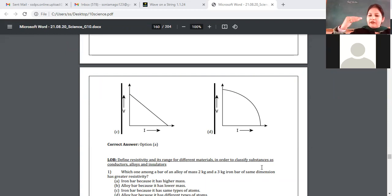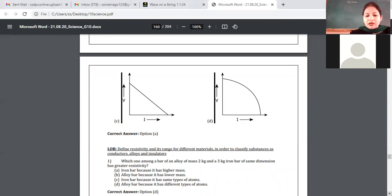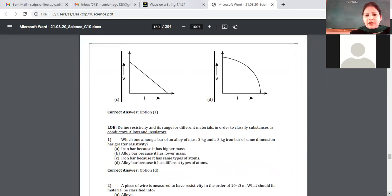Any answers from your side? Iron has less resistivity and alloy always has greater resistivity. Material depends on the arrangement of atoms, so the answer is alloy bar because it has different types of atoms.